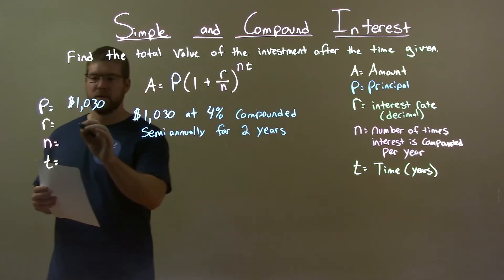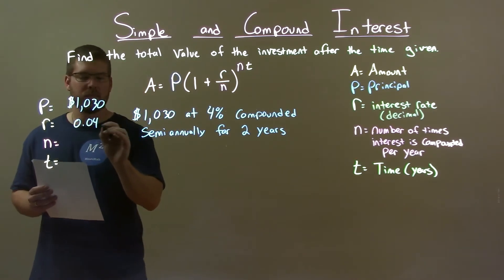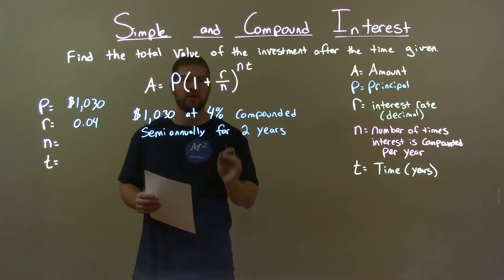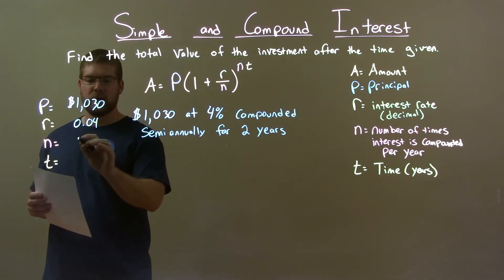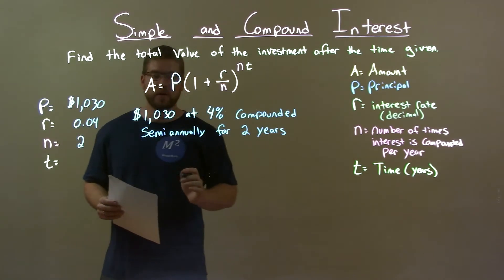My rate as a decimal is 0.04. The number of times we're compounding in a year, semi-annually, is two times. The number of years is 2.